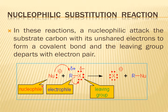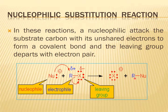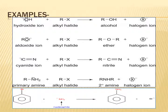This is a nucleophile — as I already explained, a nucleophile means a negatively charged ion. This negatively charged nucleophile attacks the electrophile here, and the leaving group departs. The ultimate product is X⁻ and R-Nu. The nucleophile attacks the substrate carbon with its unshared electrons, a covalent bond is formed, and the leaving group departs with the electron pair.